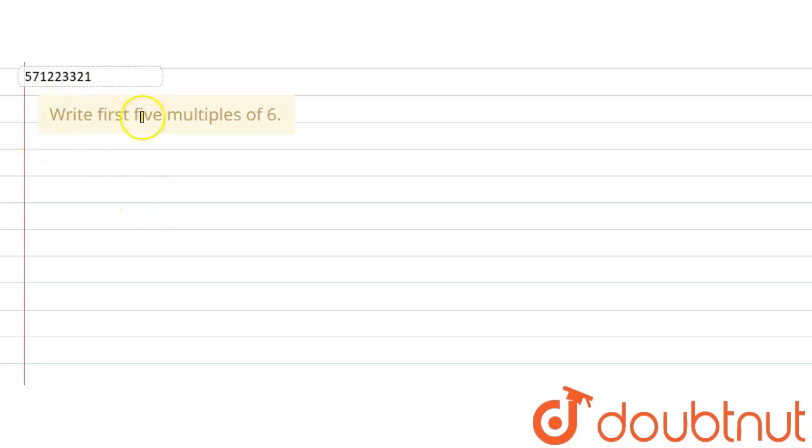The given question says write first five multiples of six. So we are supposed to write down first five multiples of six. By writing down first five multiples of six, what we mean is that we are going to write the table of six up to five.